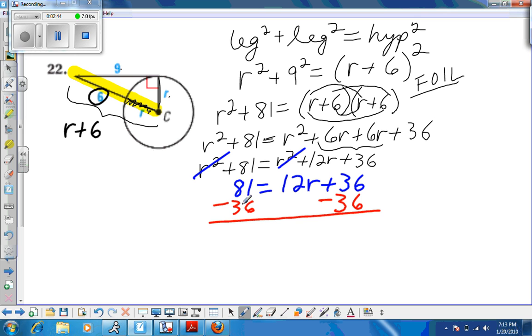81 minus 36 is 45 equals 12r. And then I divide both sides by 12, and I get r equals 45 over 12. I know you can use your calculator and give me a decimal. Let's try to reduce it as a fraction. What number goes into both 45 and 12? 3. So 45 divided by 3 is 15, and 12 divided by 3 is 4. So the best way to write our answer here is 15 fourths.